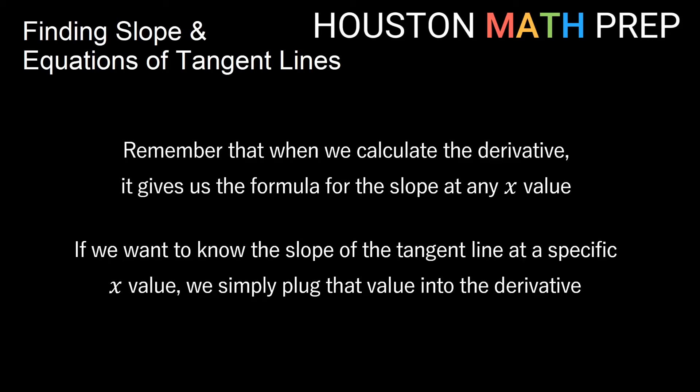Hey everyone, Houston Math Prep here. When we calculate the derivative, remember that it gives us the formula for the slope on that function at any x value. Now that we've started to learn some shortcut differentiation rules, we don't have to use the limit definition anymore. If we want to know the slope of a tangent line at a specific x value, we can simply use these shortcuts, find the derivative, and plug in that x value to find the slope.